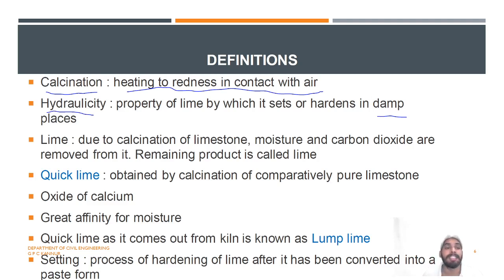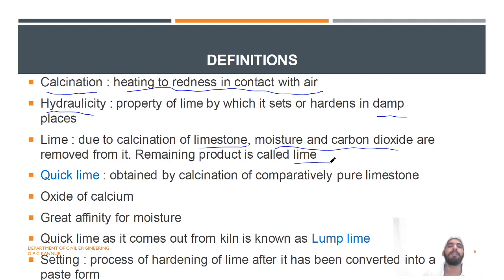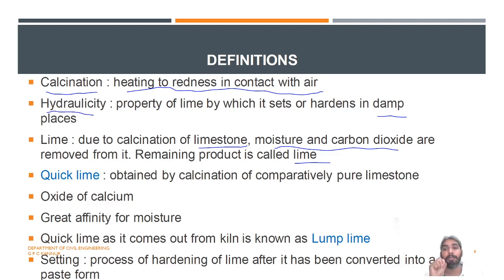Then, lime is produced due to calcination of limestone. Limestone is a type of stone. Due to the calcination of limestone, moisture and carbon dioxide are removed from it. Due to the calcination of limestone, lime is obtained.